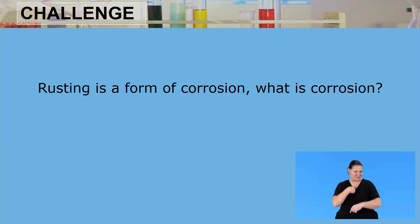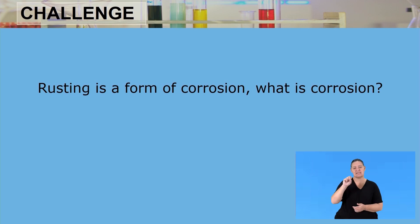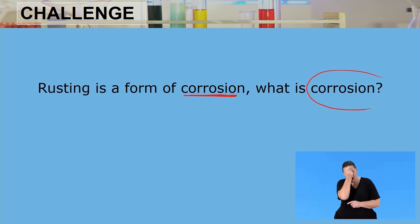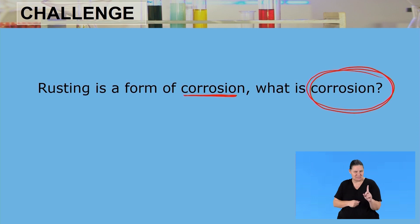I have answered a lot of questions — now it's your turn to answer a question for me. Rusting is a form of corrosion. What I need you to do is tell me what corrosion is. What do you understand about this process — the process of corrosion?